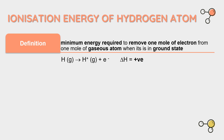Ionization energy of hydrogen atom. What is ionization energy? The definition of ionization energy is the minimum energy required in order to remove one mole of electrons from one mole of gaseous atoms when it is in the ground state. After removing its electron, the atom becomes a gaseous ion H+, and the enthalpy of this reaction is positive, showing that energy is required. The electron is written on the right side of the equation to show it has been removed.